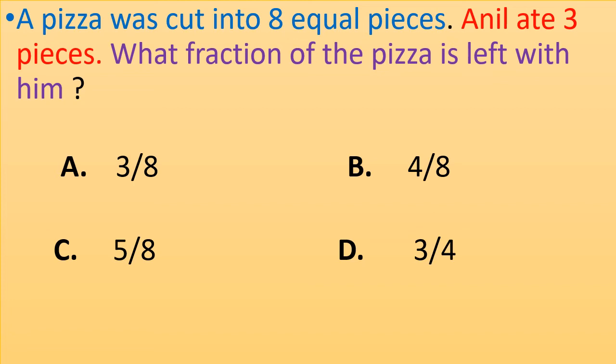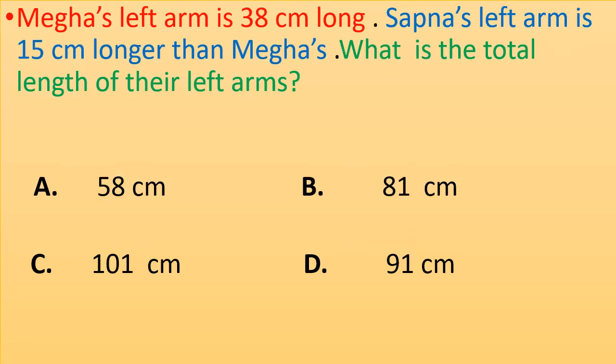Megha's left arm is 38 centimeters long. Sapna's left arm is 15 centimeters longer than Megha's. What is the total length of their left arms? A. 58 centimeters, B. 81 centimeters, C. 101 centimeters, D. 91 centimeters. Take your time and answer the question.